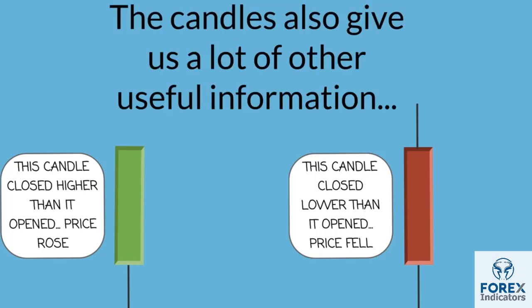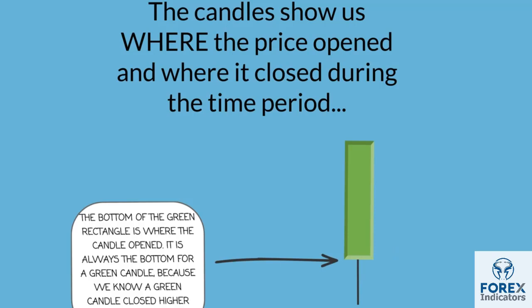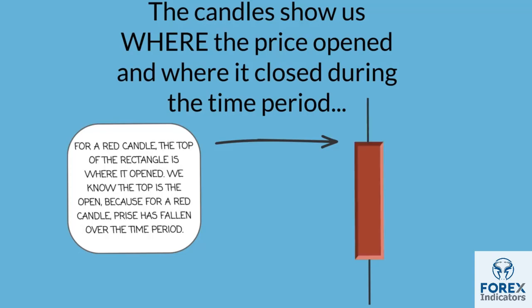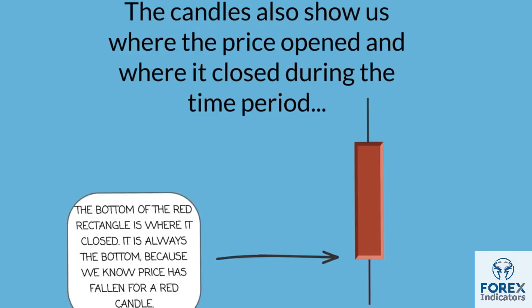The candles also give us a lot of other useful information. They show us where the price opened and where it closed during the time period. The bottom of the green rectangle is where the candle opened — it is always the bottom for a green candle because we know a green candle closed higher than it opened. The top of the green rectangle is where it closed. For a red candle, the top of the rectangle is where it opened, and the bottom of the red rectangle is where it closed.